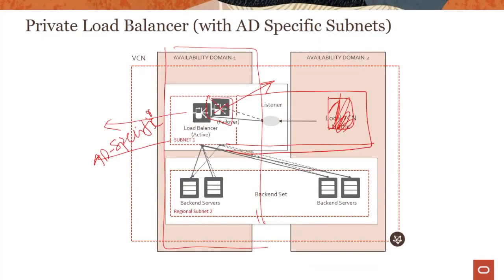Hopefully this gives you a quick overview of the private load balancer. Why would you use a private load balancer? If you have a multi-tier application with a web layer, a middle tier, and a backend tier, you could have a public load balancer at the web tier handling incoming traffic, and private load balancers between the middle tier and backend tier for high availability and traffic distribution. Thank you for watching this lecture series on OCI Load Balancing Service.